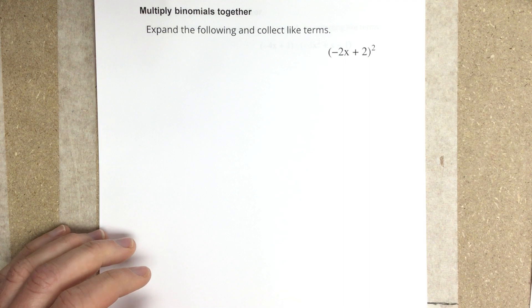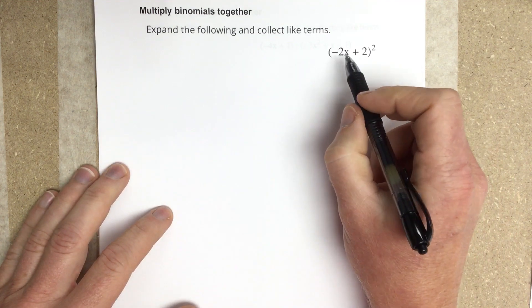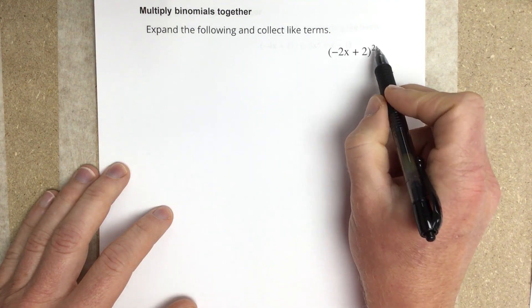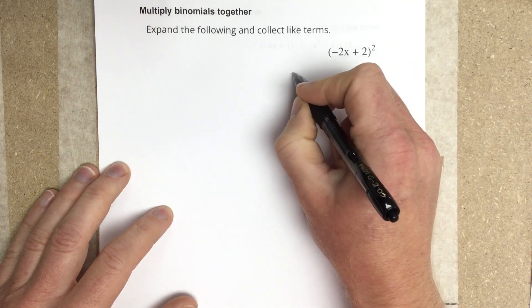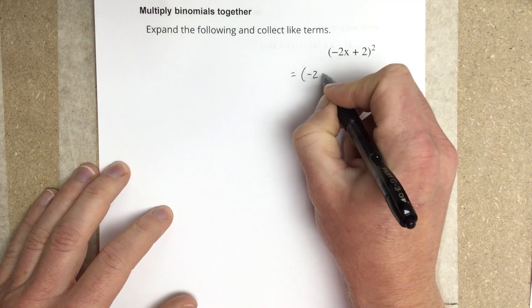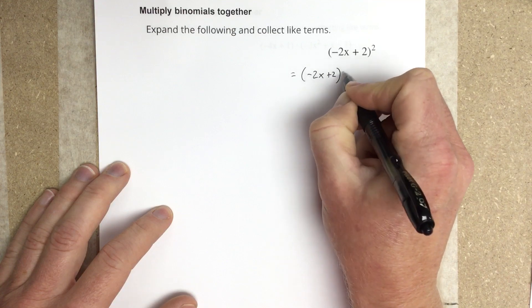Let's do a second problem. In this case we have negative 2x plus 2 squared. They're trying to throw you off a little bit by putting a squared up there, but really what that means is we have negative 2x plus 2 just times itself.